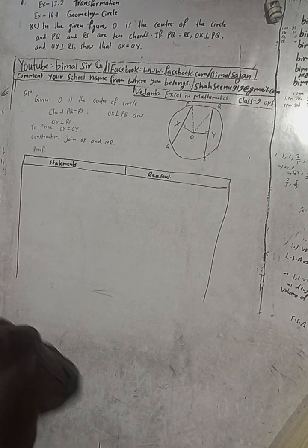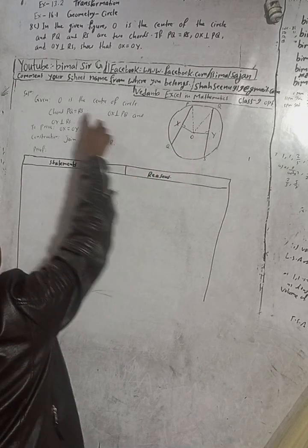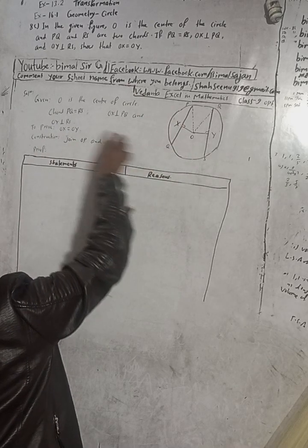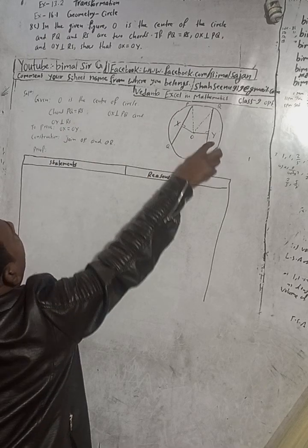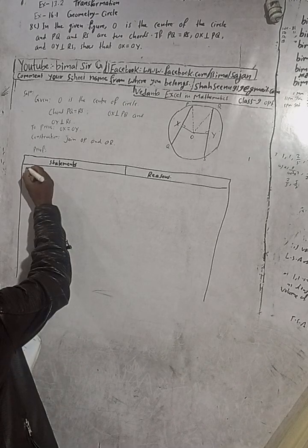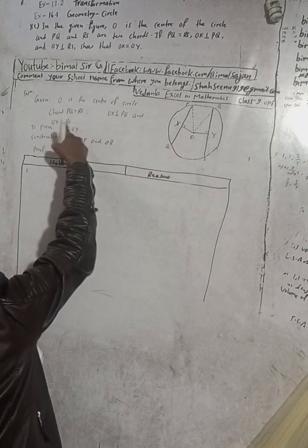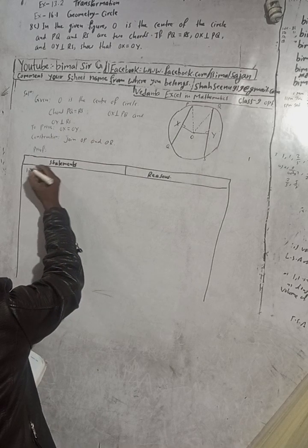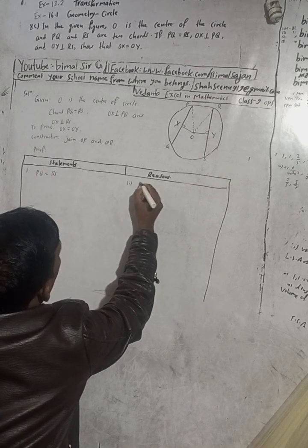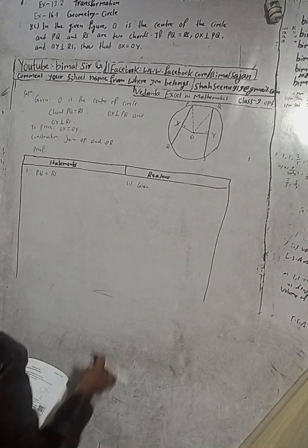Now I have written here: given O is the center of the circle, chord PQ is equal to RS. That is given — PQ is equal to RS. This is what is given. Number 1: given, PQ is equal to RS.